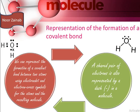There are two ways to represent the formation of a covalent bond. First, we can use electron dot and electron cross symbols for the atoms and the resulting molecule — for example, in a water molecule, the electrons of the oxygen atom are shown by dots and the electrons of the hydrogen atom are shown by crosses. Alternatively, we can represent the covalent bond by a dash, where the shared pair of electrons is represented by a dash in the molecule.